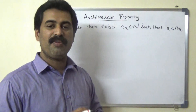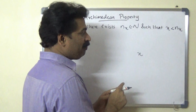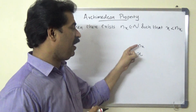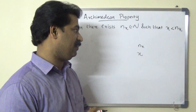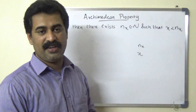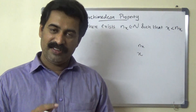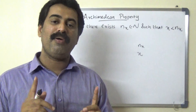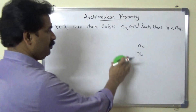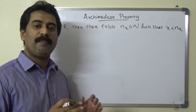Because if we take any real number x, corresponding to this real number there exists a natural number nx such that nx is greater than x. That means the set of natural numbers has no upper bound — the set of natural numbers is unbounded.